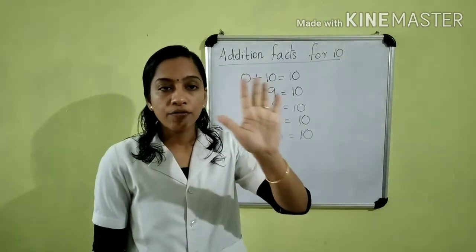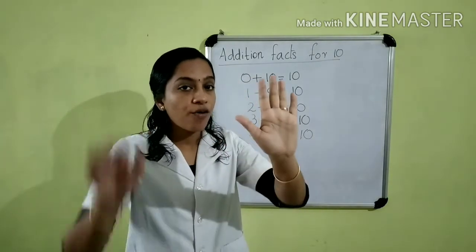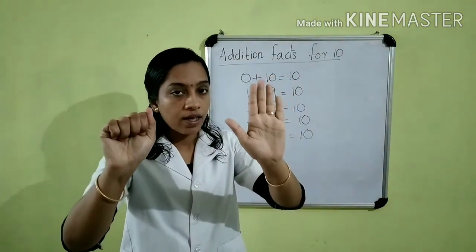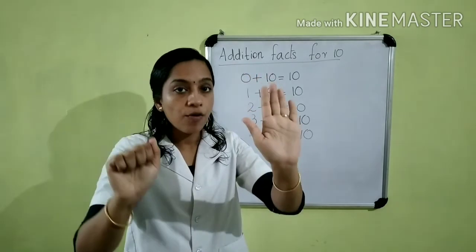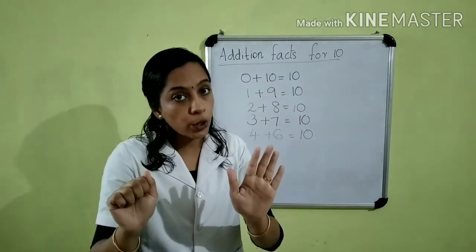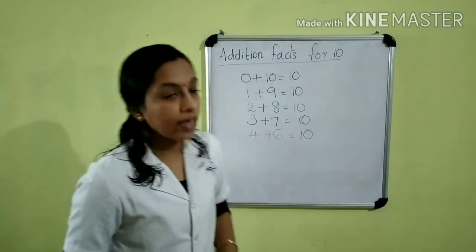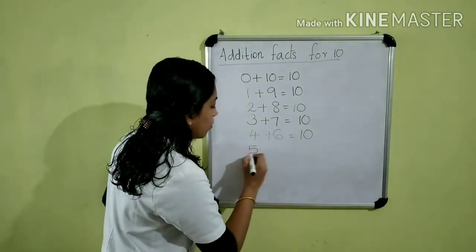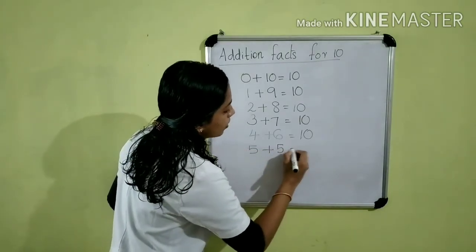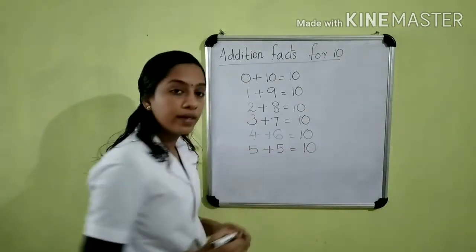Then, 5 fingers are extended and 5 fingers are folded. How many fingers are folded? 5 plus 5 is equal to 10. So we can write, 5 plus 5 is equal to 10.